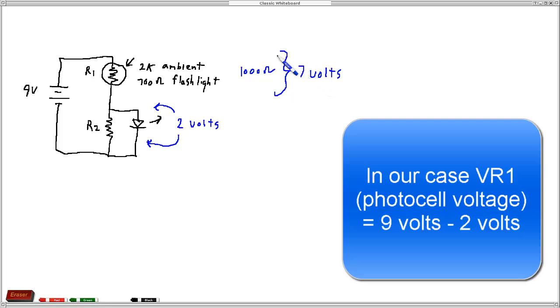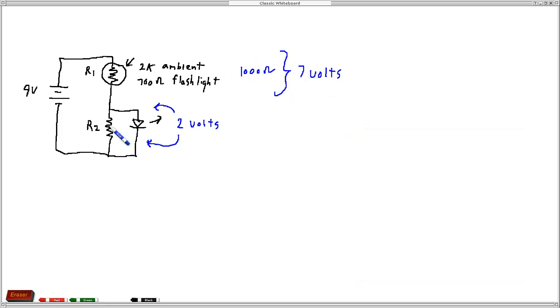So that lets us solve for R2, the only thing left to solve for. To find the value of R2, we can use Ohm's law. First, we find the current I, which equals 7 volts over 1,000 ohms, and that gives us 7 milliamps—0.007 amps.